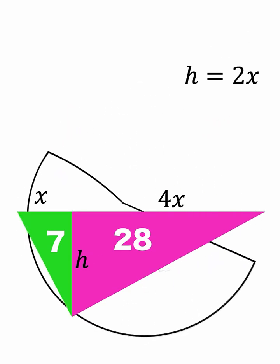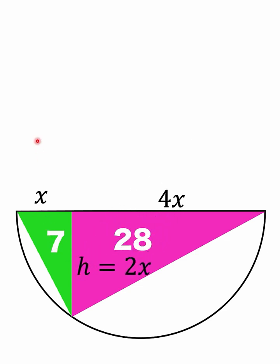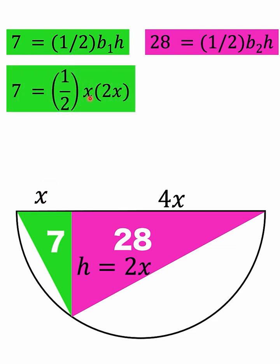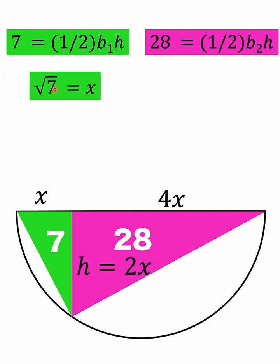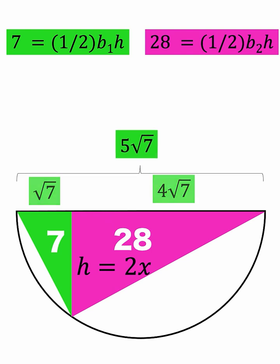Now that we know the common height is 2x, let's go back to the area formula for the green triangle: 7 = (1/2) · x · 2x. One half times 2 is 1, so the right side becomes x², giving x² = 7, and thus x = √7. This means the base of the green triangle is √7 and the base of the pink triangle is 4√7. Adding these two bases gives the diameter: √7 + 4√7 = 5√7.